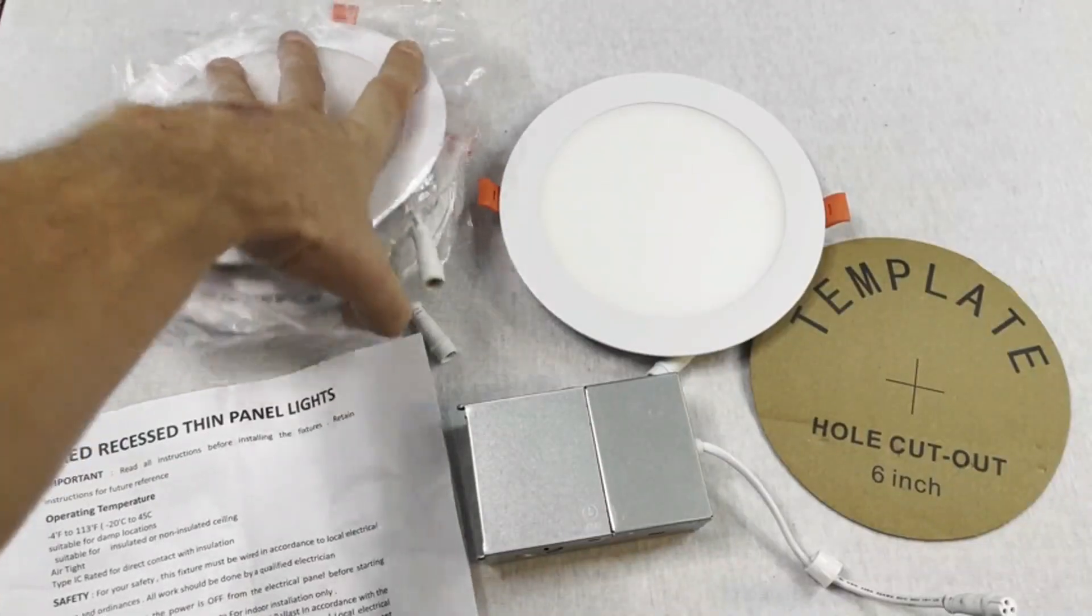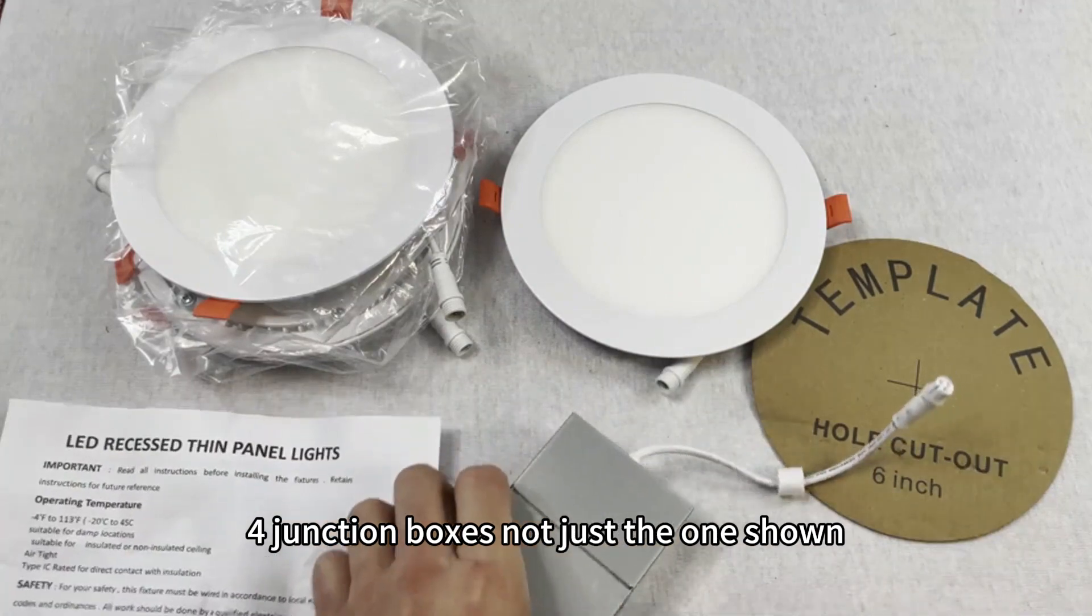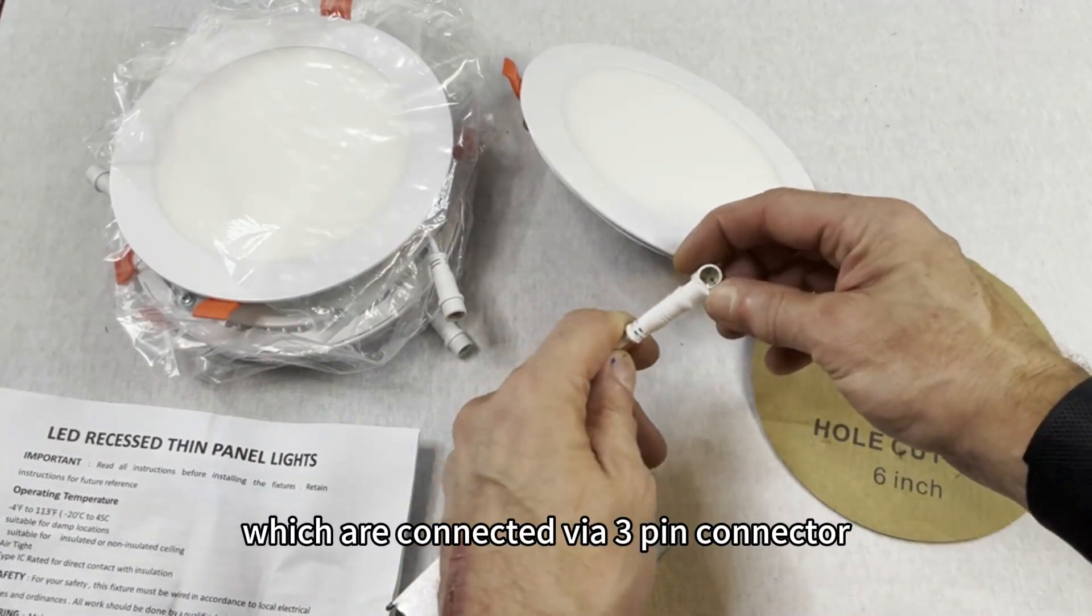This Transmart LED package includes four lights, four junction boxes, not just the one shown, which are connected via a three-pin connector.